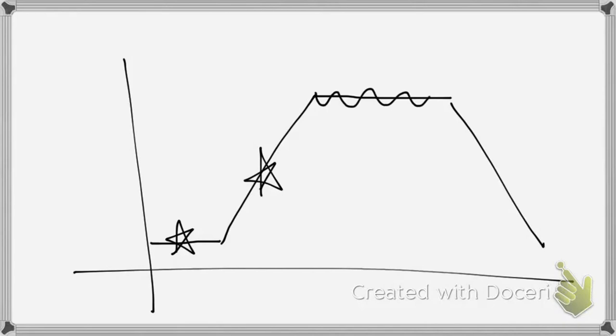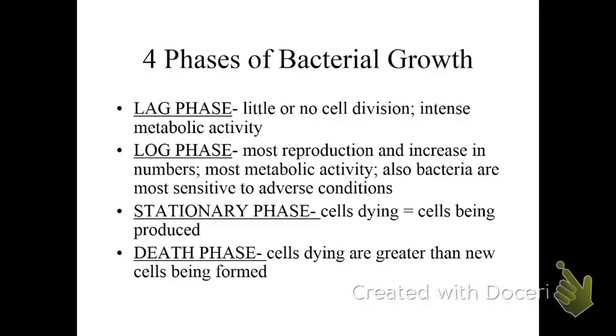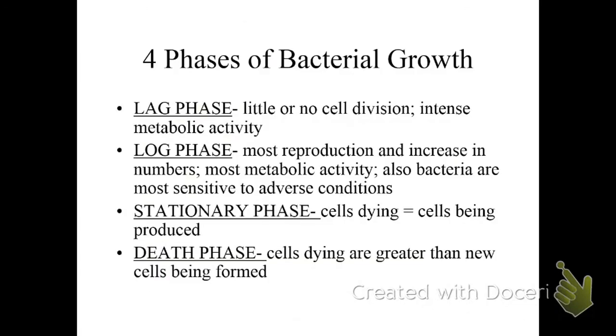Here is where they've leveled off. And then of course, the death phase. I think I actually have, there we go. So you can see lag phase leveled off at the very beginning. And then log or exponential, stationary, and death phase. So little to no cell division, most reproduction and increase in numbers, most metabolic activity with log. And then stationary, cells dying equal cells being produced. And then death phase, they're dying faster than they're going through binary fission.